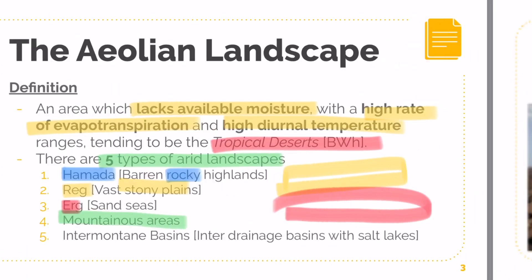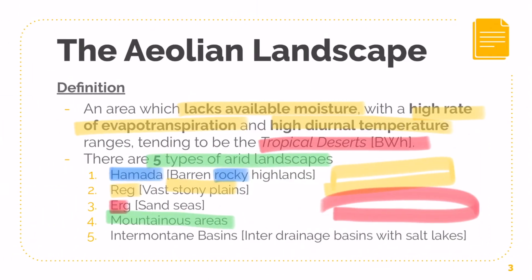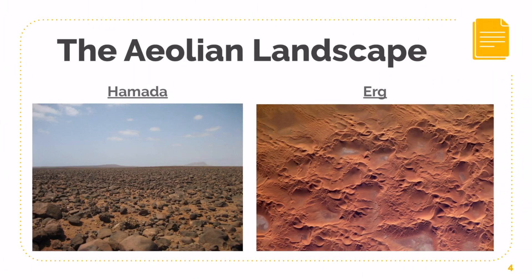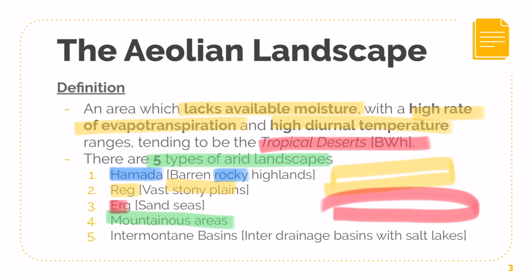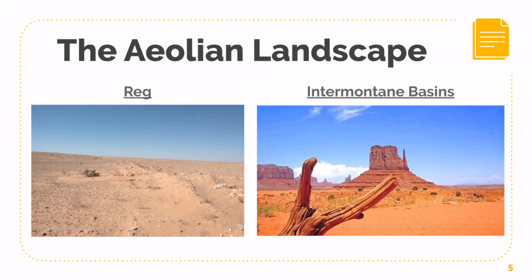Here are certain visual examples. Hamada, like we mentioned, is your rocky highlands — it looks extremely rocky, almost impossible to walk around. Your Aeol is your sand sea — lots of sand particles everywhere. The stony part is your Rack — you can see small stones, kind of like pebbles. Your inter-montane basins look a lot like those Aeolian structures you might have seen in the US.